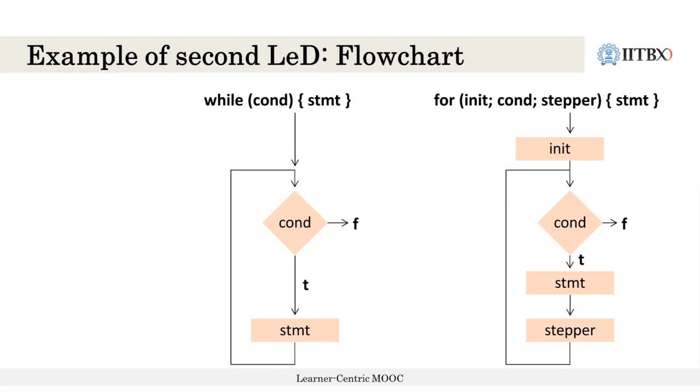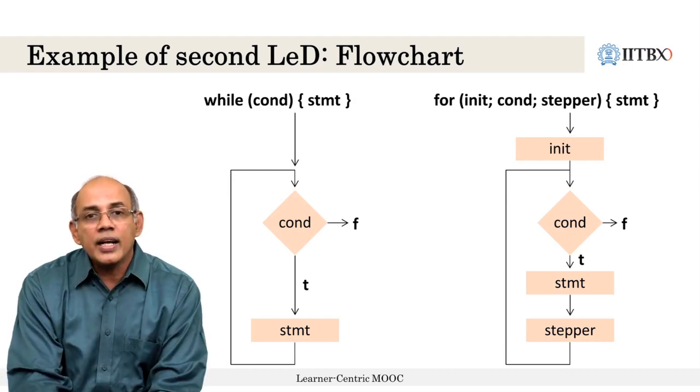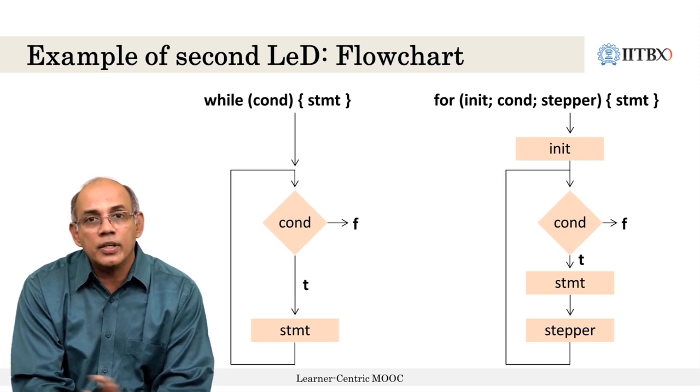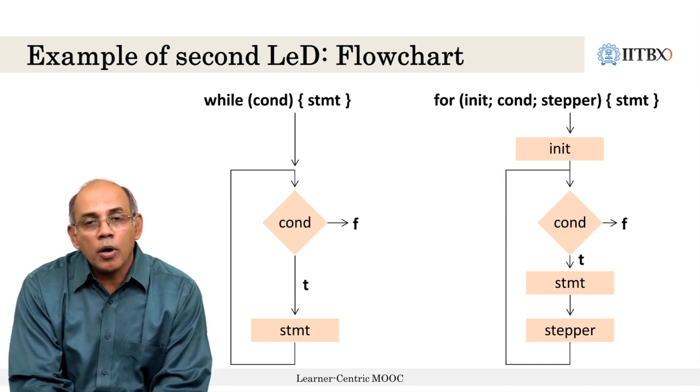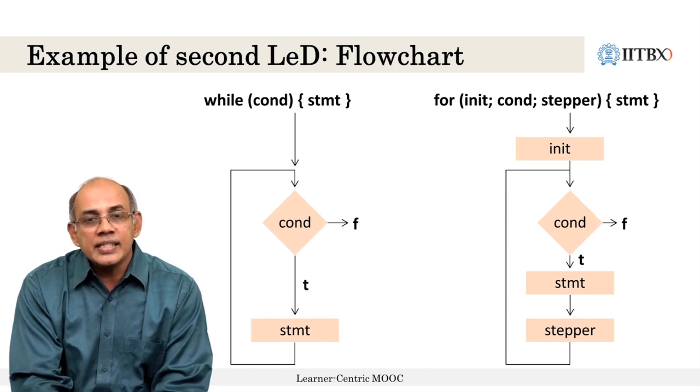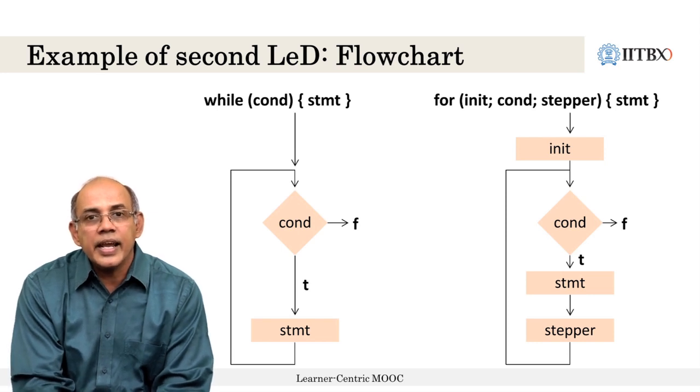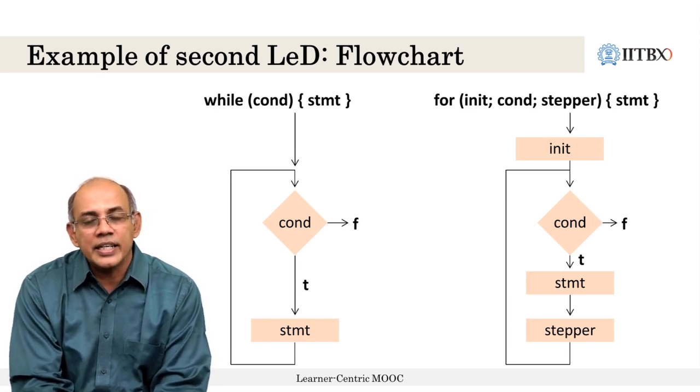Another LED could be on the difference between while loops and for loops. On the one hand, we could show the flowchart of a while loop versus the flowchart of a for loop. On the other hand, we could also have a discussion of the syntax of the two different loops. We could talk about entry criteria and exit criteria for both of these loops. This would be another LED that we can create for the topic of iterations.